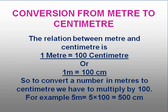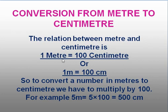Hello children, today we will see how to convert meter to centimeter and vice versa. The relation between meter and centimeter is 1 meter is equal to 100 centimeter. You should learn this: 1 meter is equal to 100 centimeter. Meter can be represented as M and centimeter as CM, so you can write it as 1 M is equal to 100 CM.